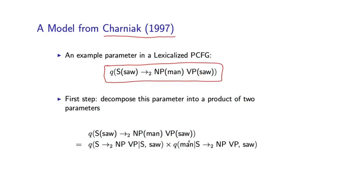So the first step is going to be to actually decompose this into a product of two terms, two parameters, which will make our job slightly simpler. So this first parameter corresponds to the probability, given that I have s-saw, the probability of that rewriting as np-vp. So if you think we're rewriting s-saw, there are many possible ways of rewriting it. Here I have parameter corresponding to just the choice of the rule, and for now ignoring the second lexical item, man, associated with this rule.